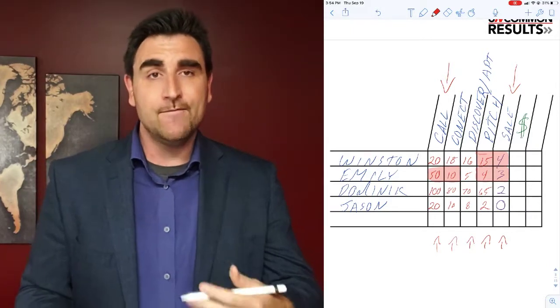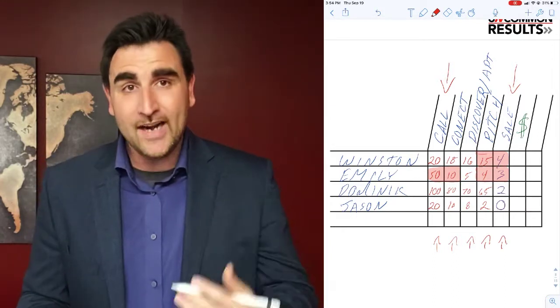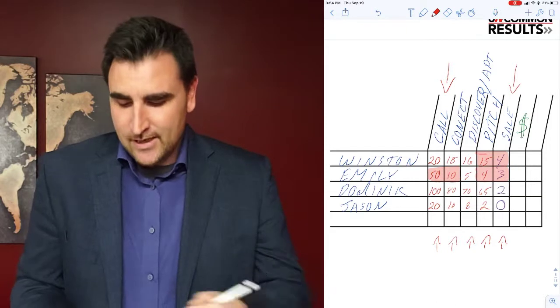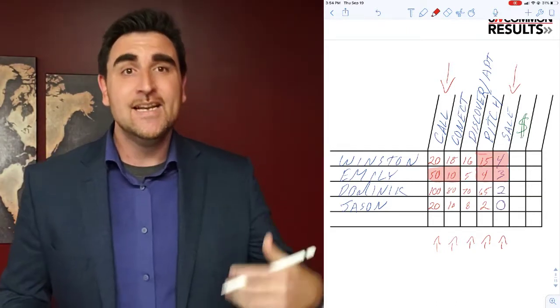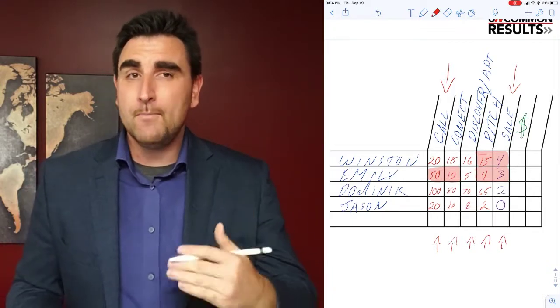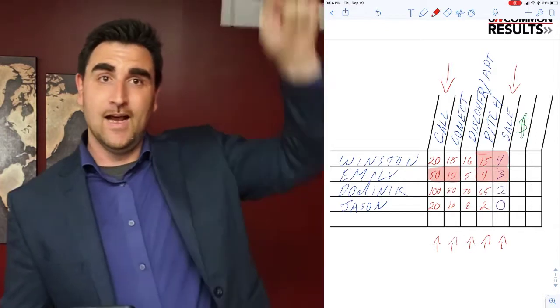The best way to help Emily is to figure out who are the 50 you're calling - are they the right people, the right audience, the right list? She's a powerhouse when it comes to connecting, discovering their needs, making the pitch and closing them. So you want to put her in front of the right people.